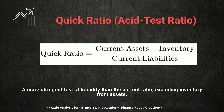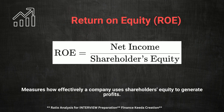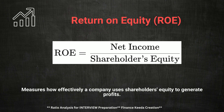Let's also discuss Return on Equity, or ROE, which measures a corporation's profitability by revealing how much profit a company generates with the money shareholders have invested. The formula is Net Income divided by Shareholders' Equity. Interviewers may ask: what does a high ROE indicate? A high ROE suggests that a company is effectively using its equity base to generate profits. However, it's essential to consider the context, as a high ROE can also result from high financial leverage, which increases risk. Being able to analyze ROE in conjunction with other financial metrics will demonstrate your comprehensive understanding of corporate finance.